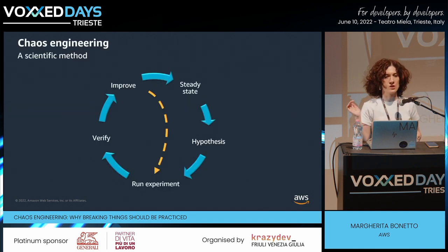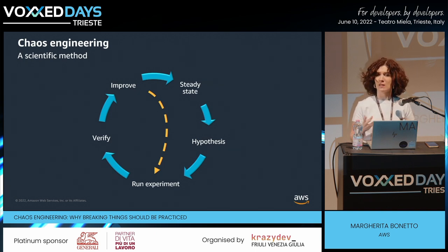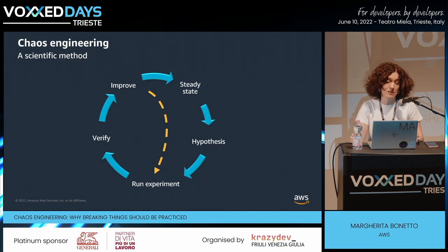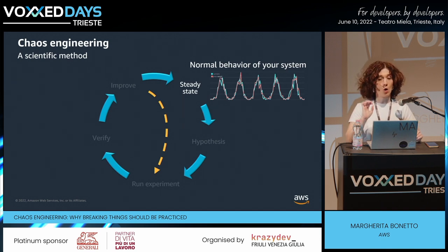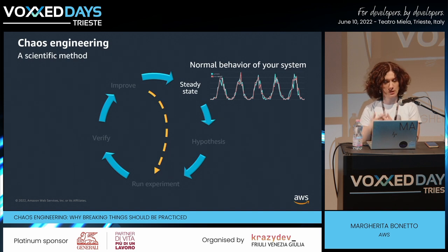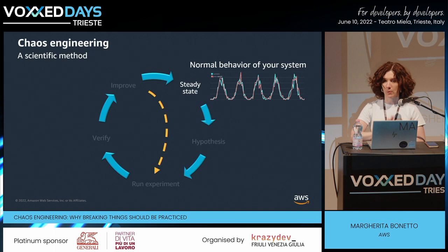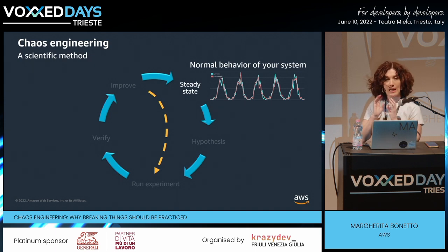Chaos Engineering is a way of experimenting on your system using a scientific method approach. Start from the steady state — the normal running. Monitor, observe. Observe your system day by day, week by week, year over year. Check patterns, really understand your system. Then you can start making hypotheses: What if my balancing layer goes down? What if HA Proxy goes down? What if one Cassandra node goes down? What about latency on a public network?